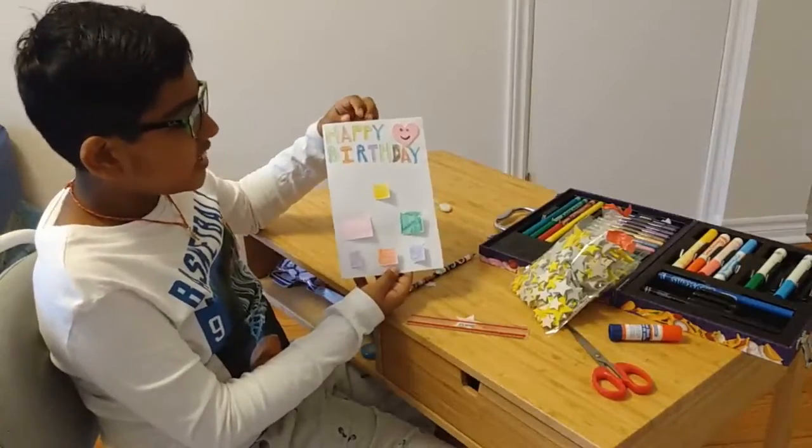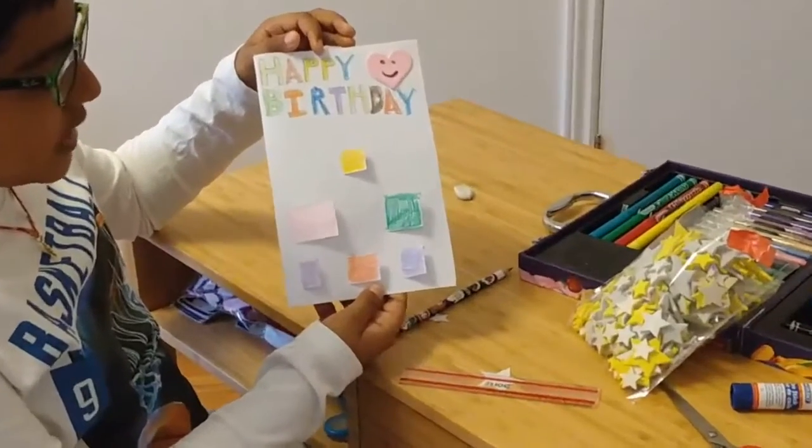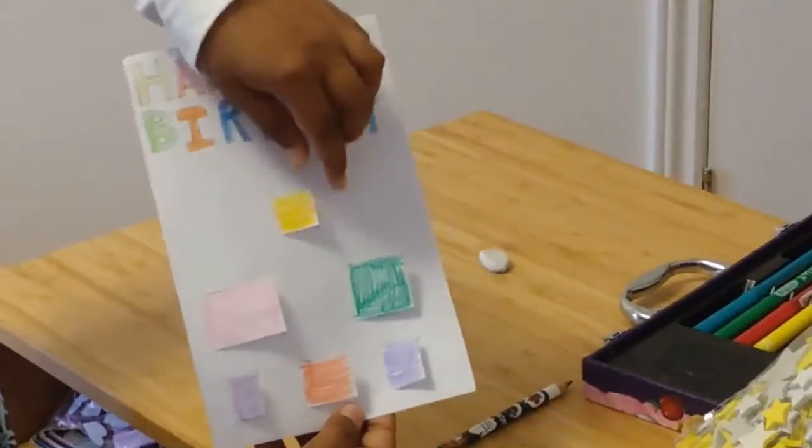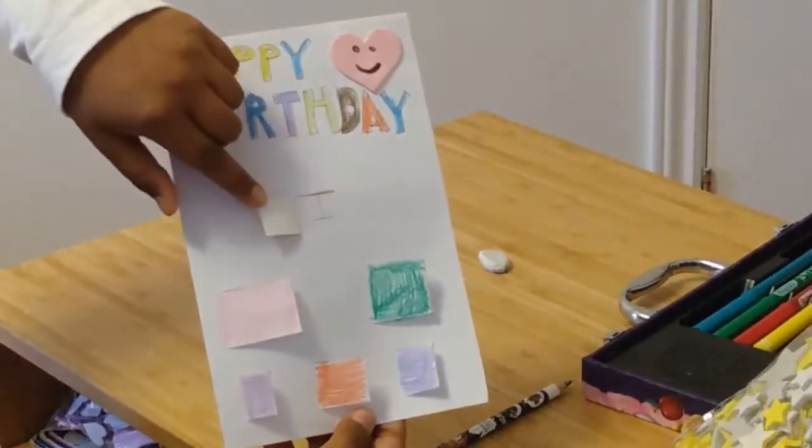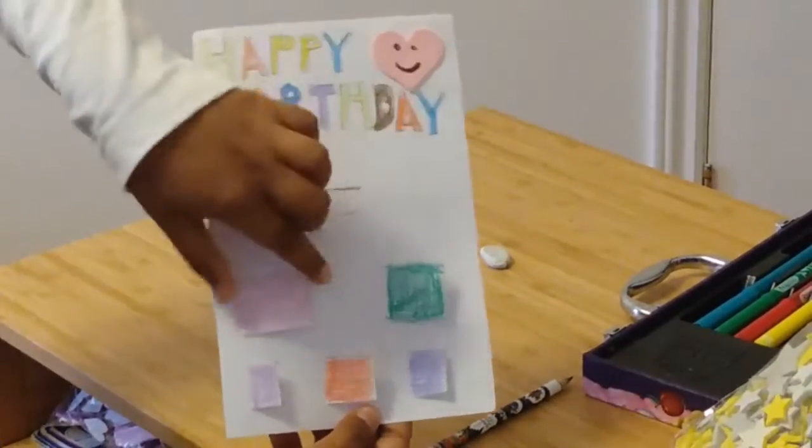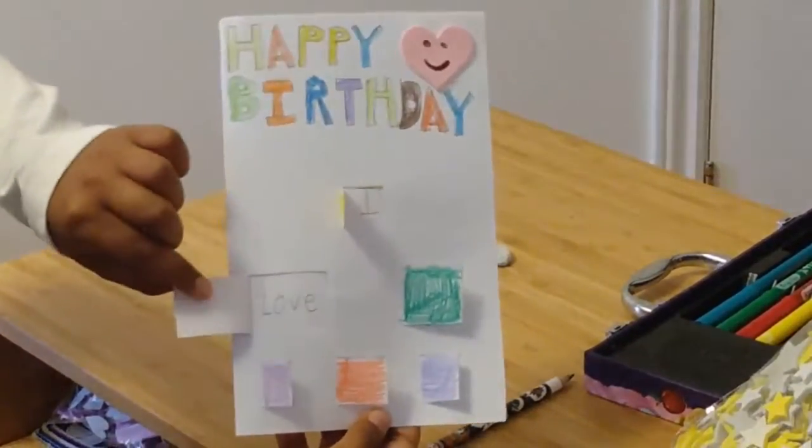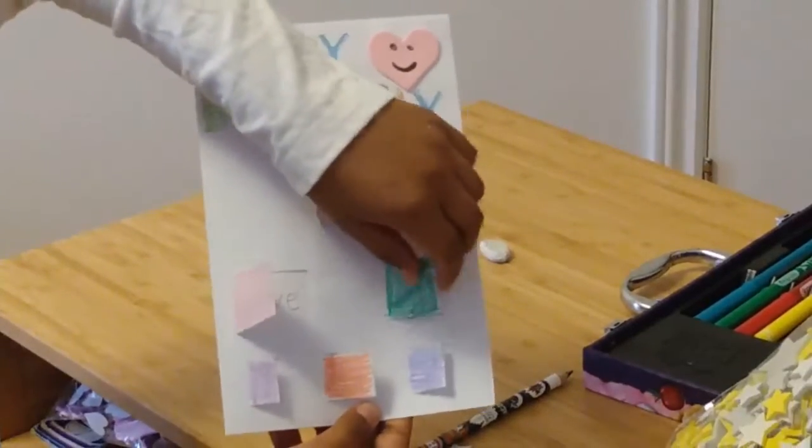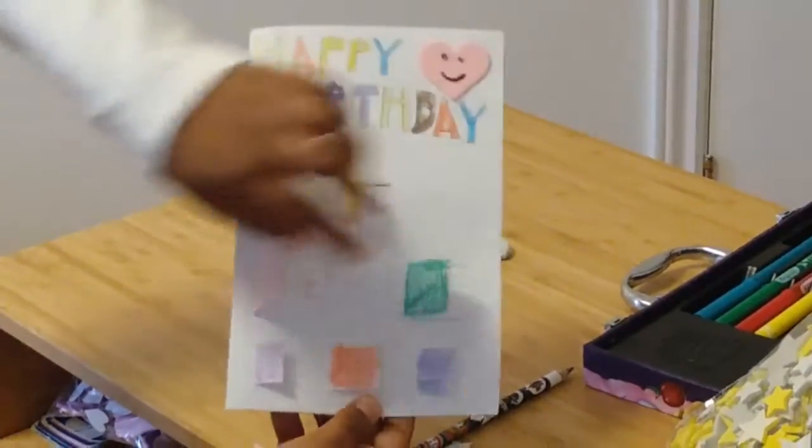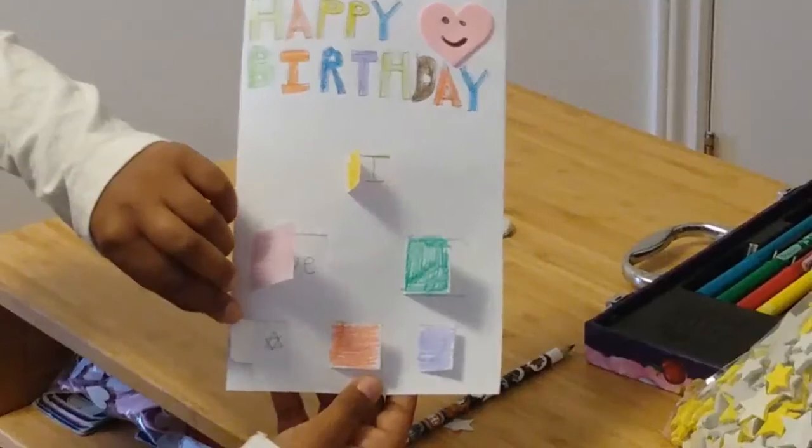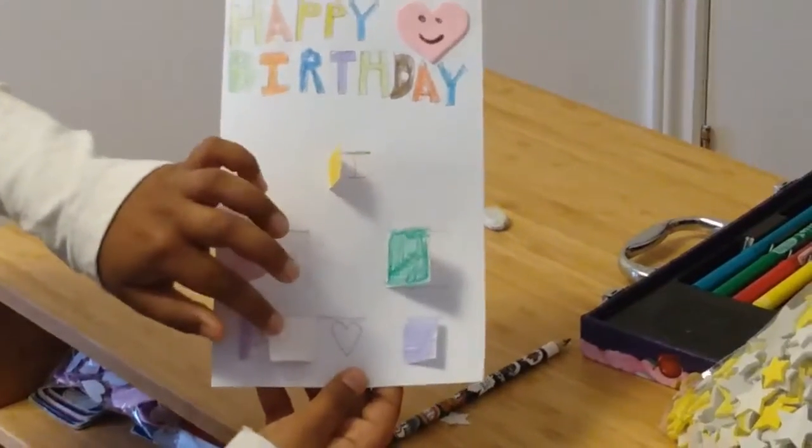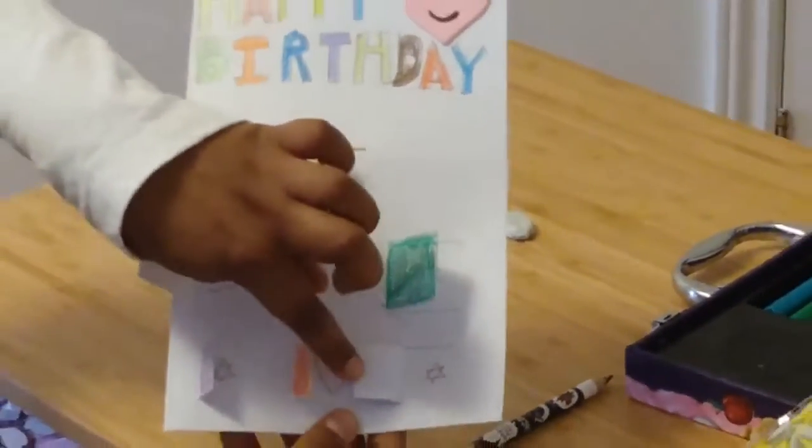So now I am done coloring and this is how my card looks. Open this flap, I have eyes. Open this, I have love. And over here I have you. Here I have a star, here I have a heart, here I have a star.